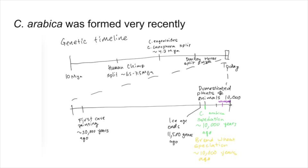I thought it was really interesting that Coffea arabica, in order to skirt the sterility problem coming from the difficulty of meiosis when crossing two distant species, was able to make multiple copies of its chromosomes. Now it's the only species in the Coffea genus that has four copies of every chromosome. But because this is a relatively recent event, it has had major effects on the diversity of Coffea arabica as a species.